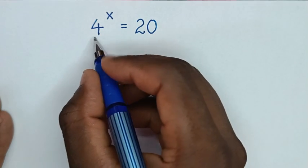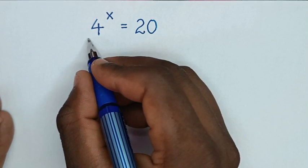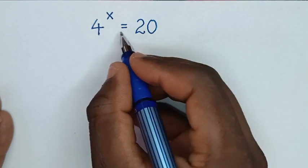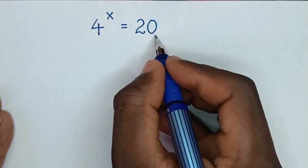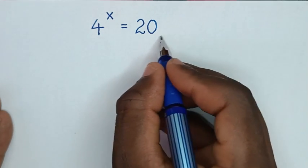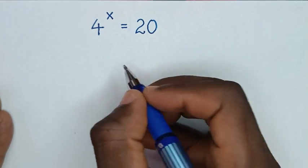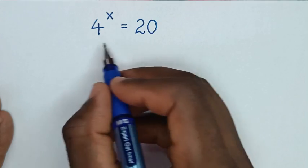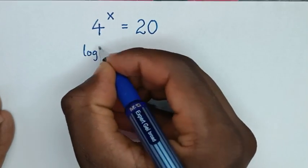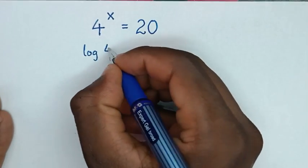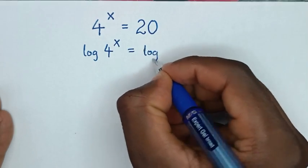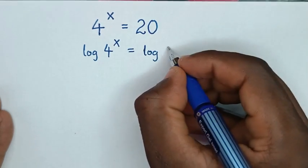Hello, you are welcome to solve this math problem of 4 power x is equal to 20. To find the value of x from this equation, in the first step we'll apply log in both sides. So it will be log of 4 power x is equal to log of 20.